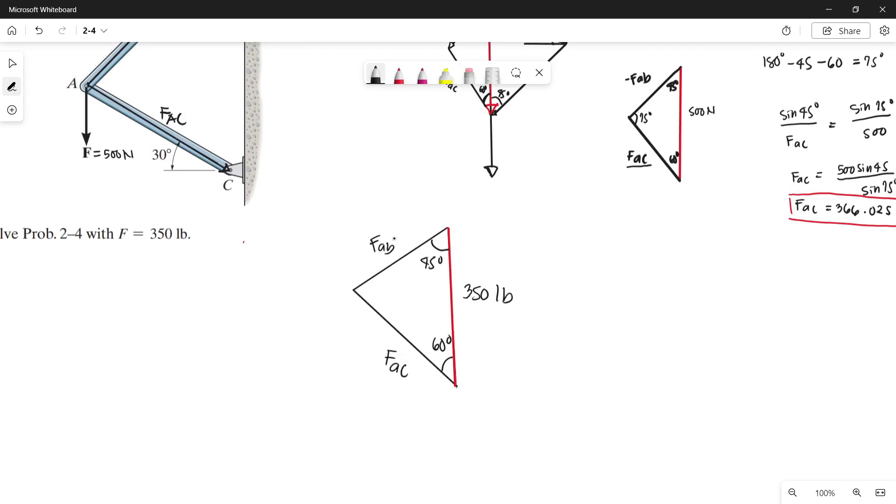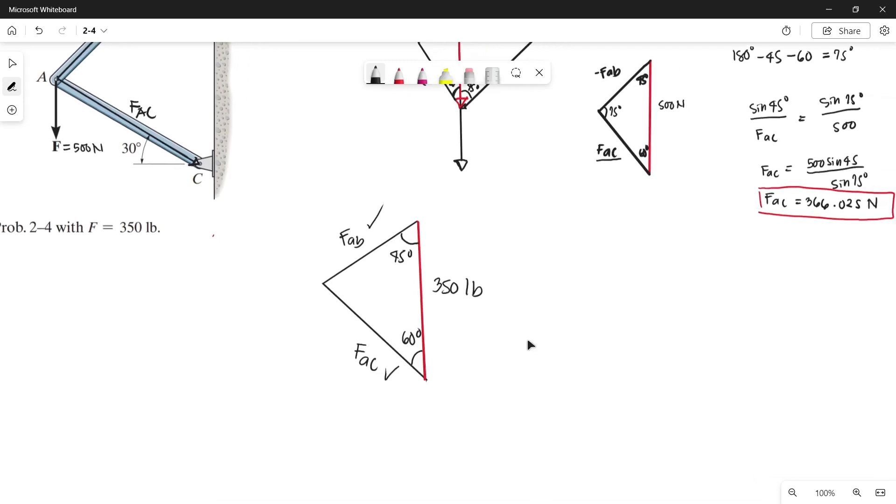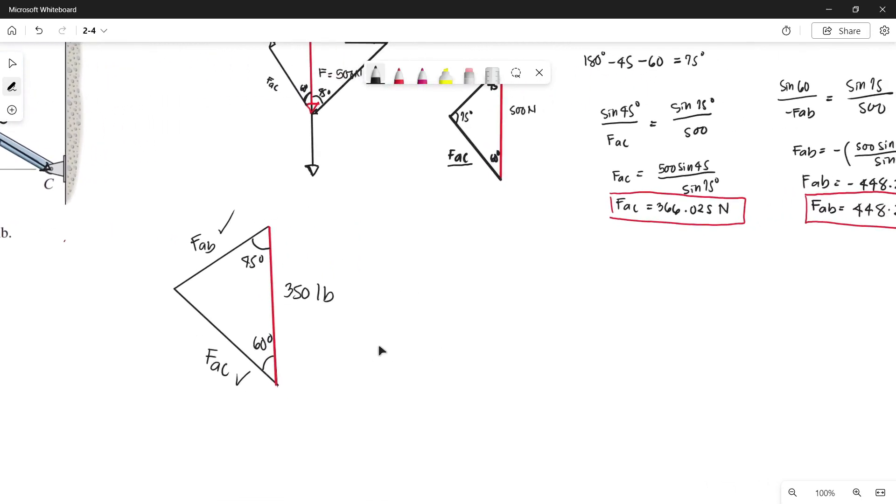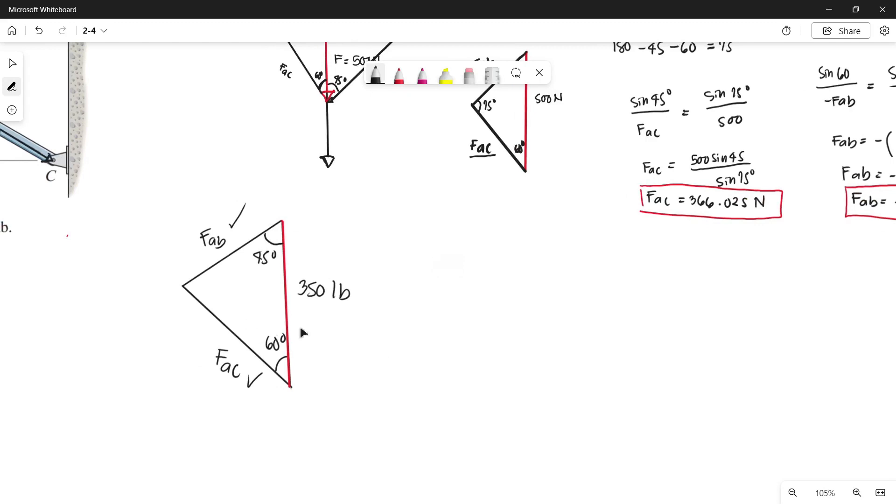Now let's find the magnitude of force AB and force AC. Again, let us use the law of sine. Looking at our triangle, the sum of the interior angles of a triangle is 180 degrees, so let's subtract 180 minus 45 minus 60. We can get the value of 75 degrees.